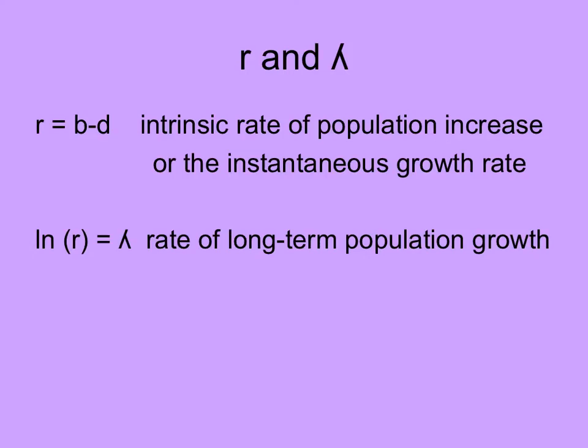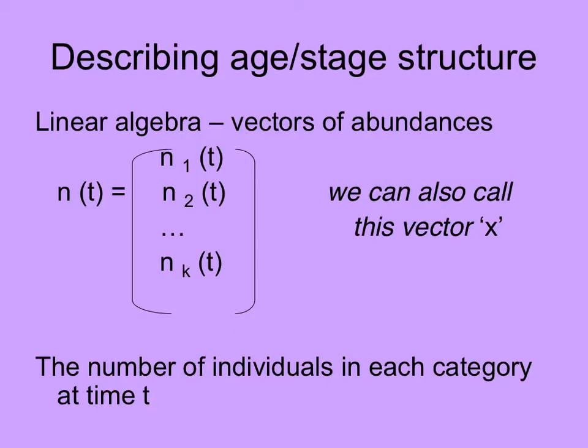You'll remember from ecology about little r, the intrinsic rate of increase, and lambda, which is the long-term population growth rate. Little r is equal to the birth rate minus the death rate, and the natural log of little r is lambda, the rate of long-term population growth.